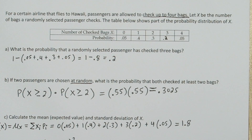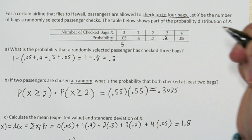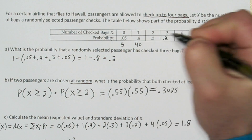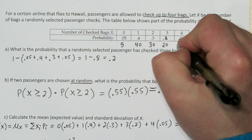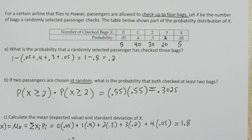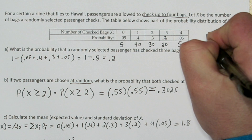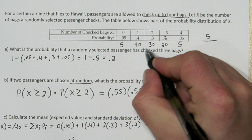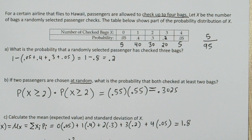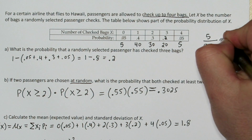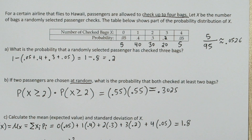Here's another way to do Part D. Imagine there are exactly 100 passengers. Then there would be 5 who checked 0 bags, 40 who checked 1, 30 who checked 2, 20 who checked 3, and 5 who checked 4. Looking at these actual numbers, there are 5 passengers who checked 4 bags divided by a total of 95 passengers who checked at least 1 bag, and that gives us the exact same probability.